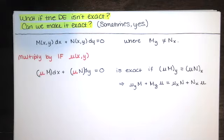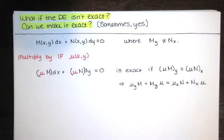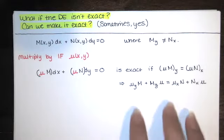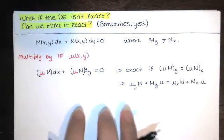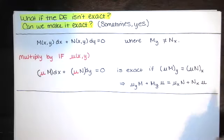This condition leads to a partial differential equation in μ, which is hard and beyond the scope of this class. So we simplify: mathematicians often look for a simpler case they can solve. One simpler case is if μ were just a function of x, or just a function of y. Let's think about what the solutions would look like in each of those cases.